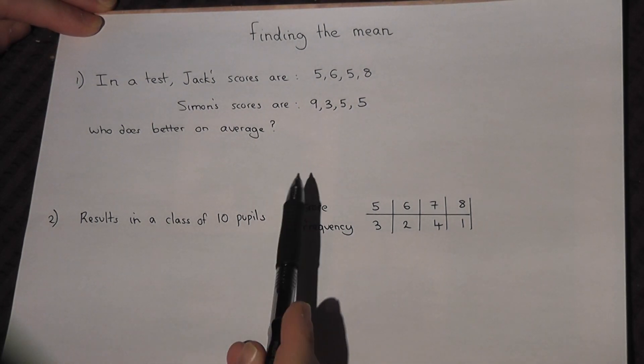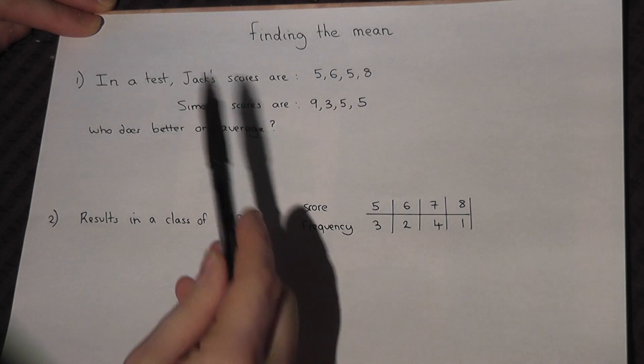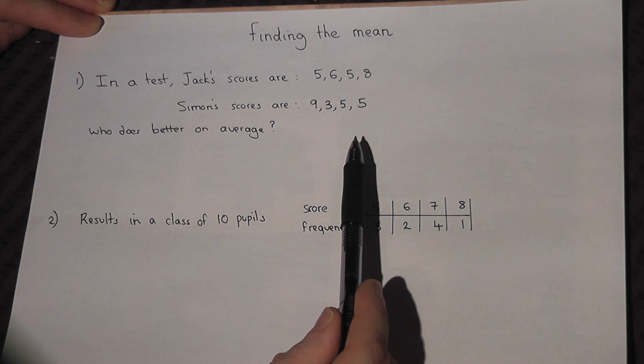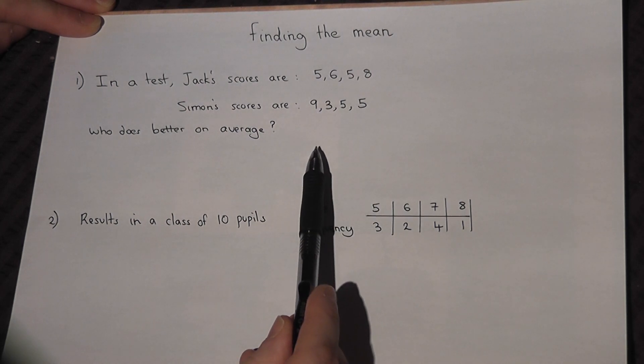Now suppose we know two sets of scores in a test, Jack's and Simon's, and we want to find out who does better on average.